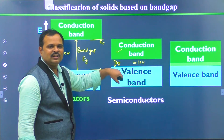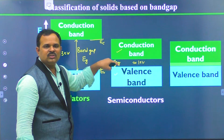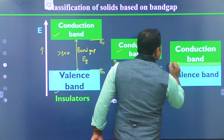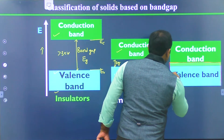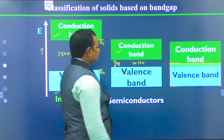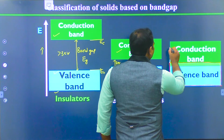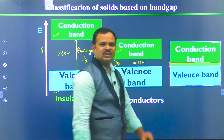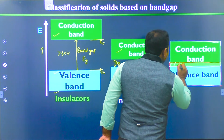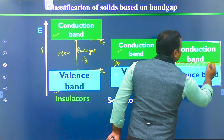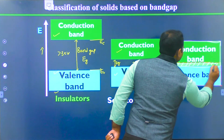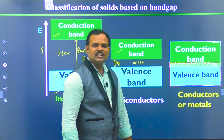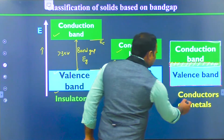That means if the material whose bandgap lies around 1 electron volt, then we can say they are semiconductors. In another case, this is the valence band and this is the conduction band — you can see that the valence band and the conduction band are overlapping each other at some portion. That means there is no bandgap. This kind of material is called conductors or metals.